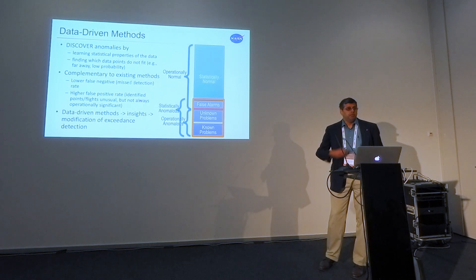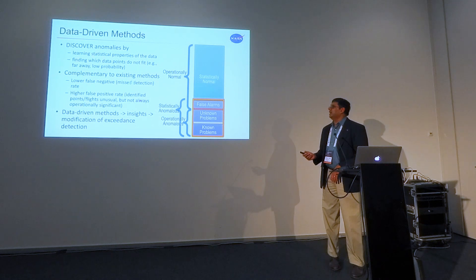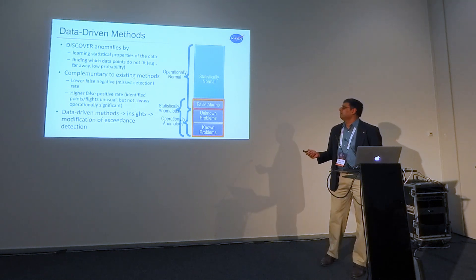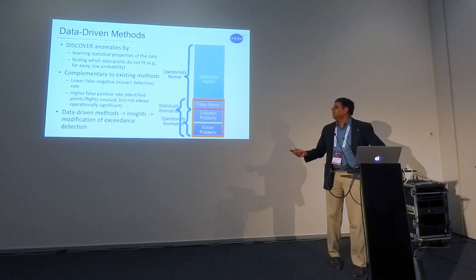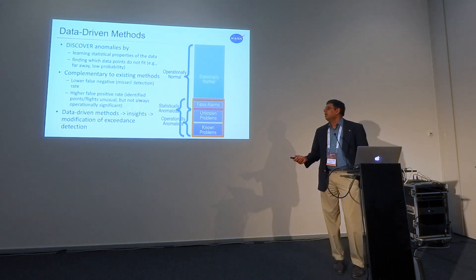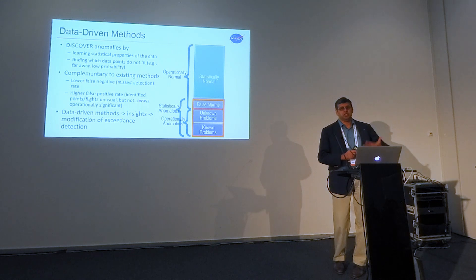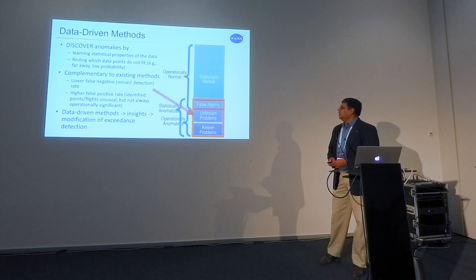What we're trying to do is kind of the opposite of the normal exceedance-based methods. Here we're really trying to make the data speak for themselves and find those statistical anomalies within which we expect operational anomalies to tend to take place. Given how safe the aviation system is, data points that are statistically normal are probably going to be operationally normal, so we can quickly throw those out. Then within the statistical anomalies, we try to throw out the false alarms and ultimately find unknown problems. We've had some false alarms that irritated people, but then found useful insights — one carrier made changes to their daily exceedance detection based on our algorithm-derived insights.